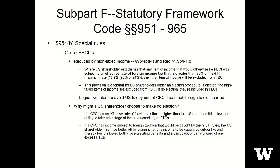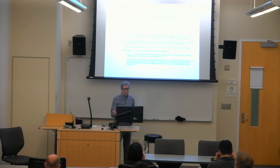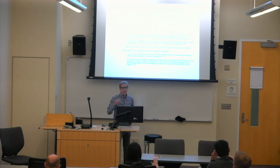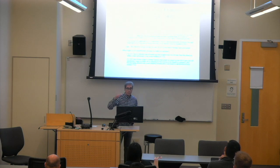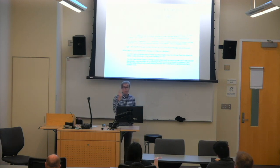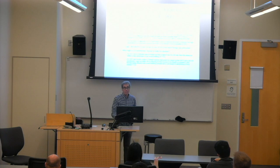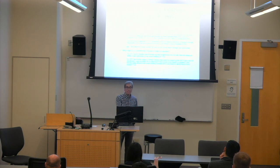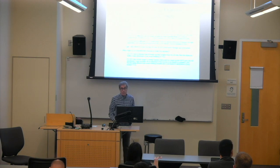The high-tax exception comes into play when the effective rate of foreign tax is greater than 90% of the U.S. rate. 90% of 21% is 18.9% — that's the magic number. If, for example, you had a 19% effective tax rate, then there would be a benefit of about 2% to make this election and treat it not as subpart F income, because you would avoid the extra U.S. tax above that 19%.